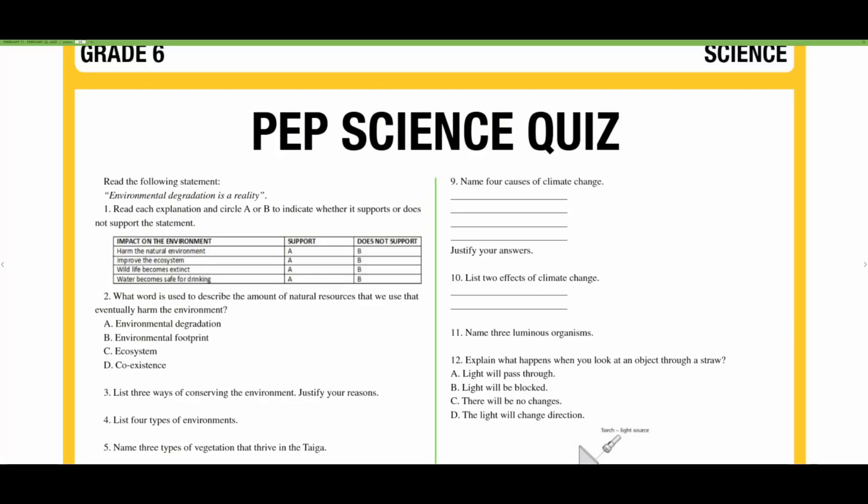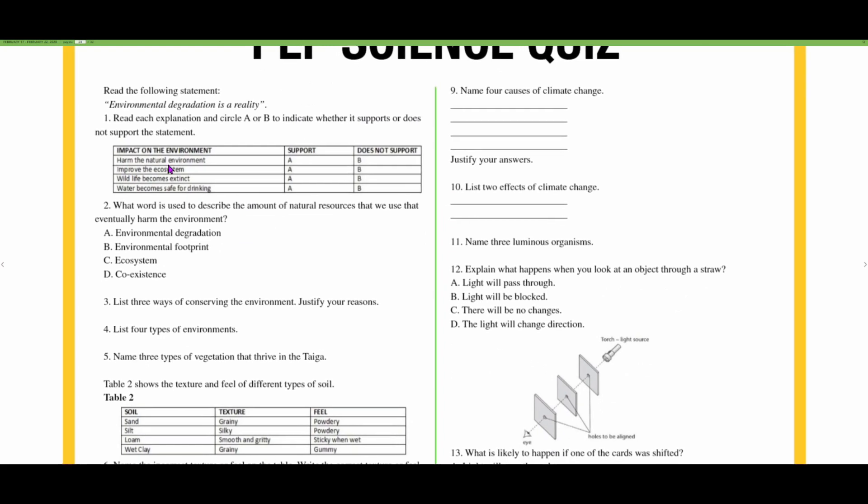In this episode, we're going to be looking at this PEP science quiz. Read the following statements: Environmental degradation is a reality. Read each explanation and circle A or B to indicate whether it supports or does not support the statement.